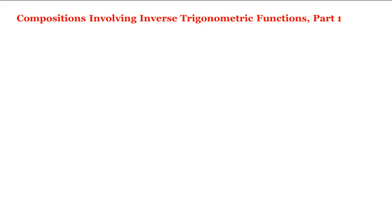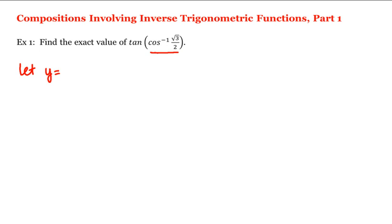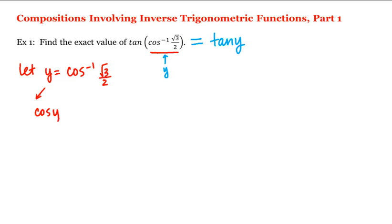Let's look at compositions involving inverse trig functions. For example, let's find the exact value of tangent of inverse cosine of square root of three over two. Let y equal this angle, so y is equal to inverse cosine of square root of three over two. That means cosine of y is equal to the square root of three over two.